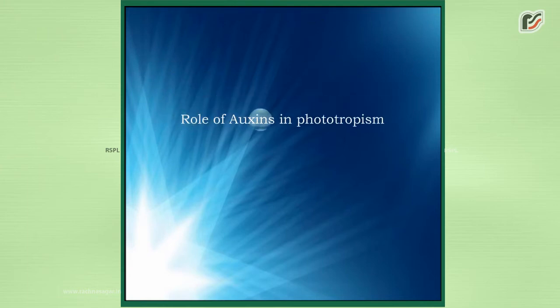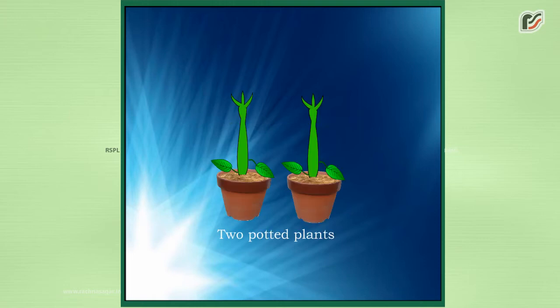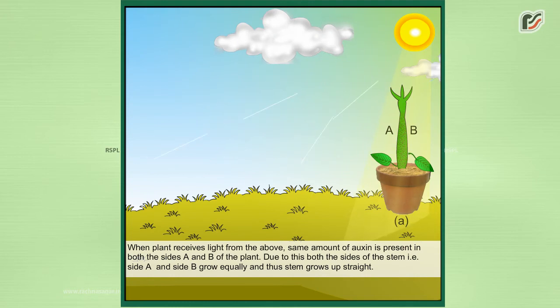Role of auxins in phototropism. Material required: two potted plants. When a plant receives light from above, the same amount of auxin is present in both